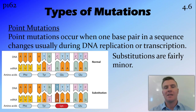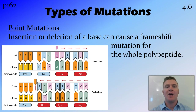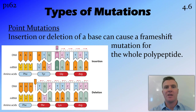A substitution — one base being changed for another — has fairly minor results: basically one incorrect amino acid in a whole polypeptide chain. However, if an insertion or a deletion occurs, giving you one extra or one fewer base pair in the chain, it's going to affect the whole polypeptide chain, or at least all the amino acids produced after that mutation.